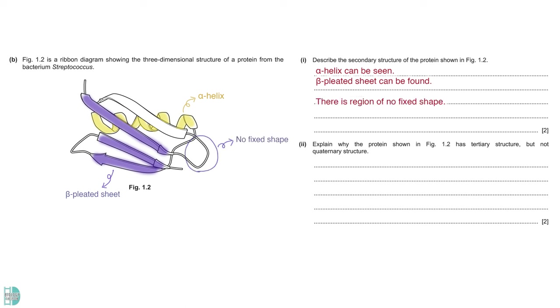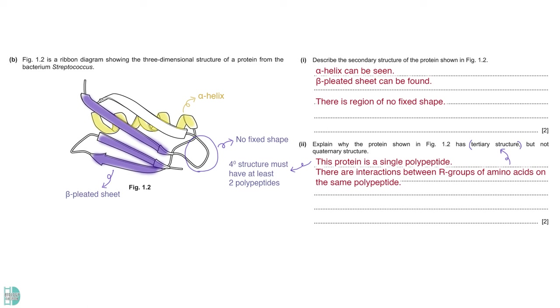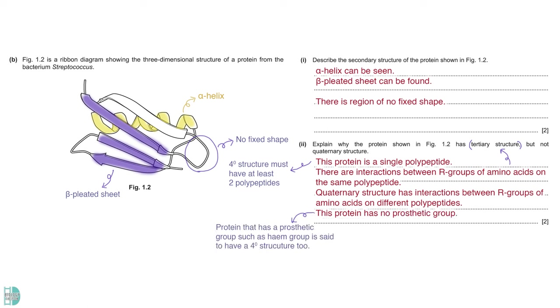B1 describes the secondary structure of the protein. As I mentioned, you can see alpha helix and beta-pleated sheets. Some regions have no fixed shape. Number 2, explain why proteins shown in figure 1.2 has a tertiary structure but not quaternary structure. Only proteins with more than 1 polypeptide have a quaternary structure. This protein is a single polypeptide. The presence of prosthetic groups such as heme group on hemoglobin is another reason a protein is said to have a quaternary structure. The protein in this picture has none.